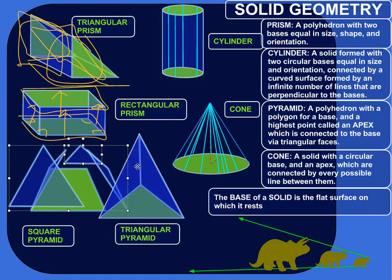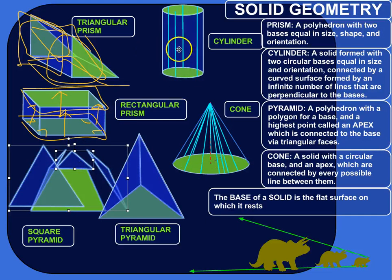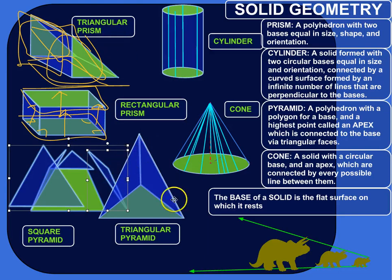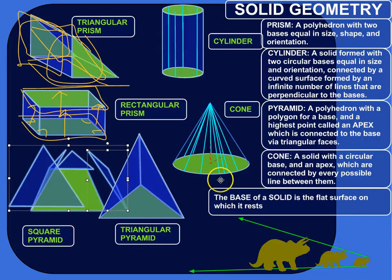So there are a few solids: prisms, cylinders, pyramids, and cones. They each have a certain kind of base — cylinders and cones have circular bases, while prisms and pyramids have polygonal bases. Prisms and cylinders have two bases, whereas pyramids and cones have one base, and that base is connected to an apex.